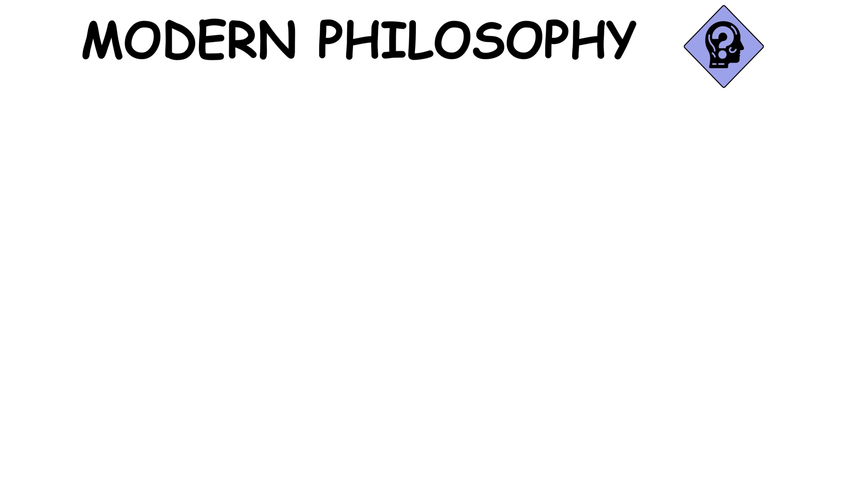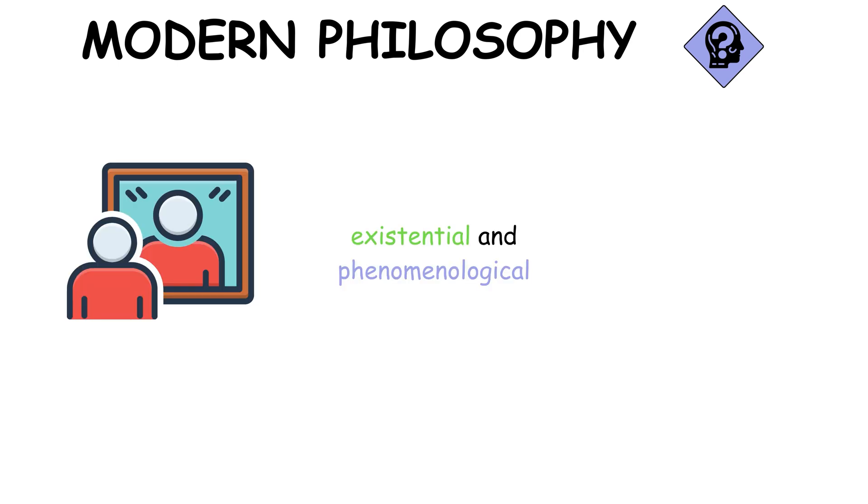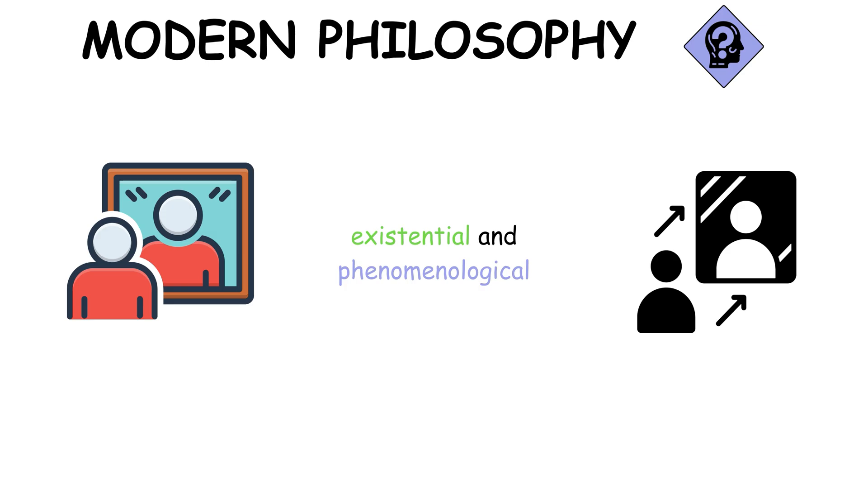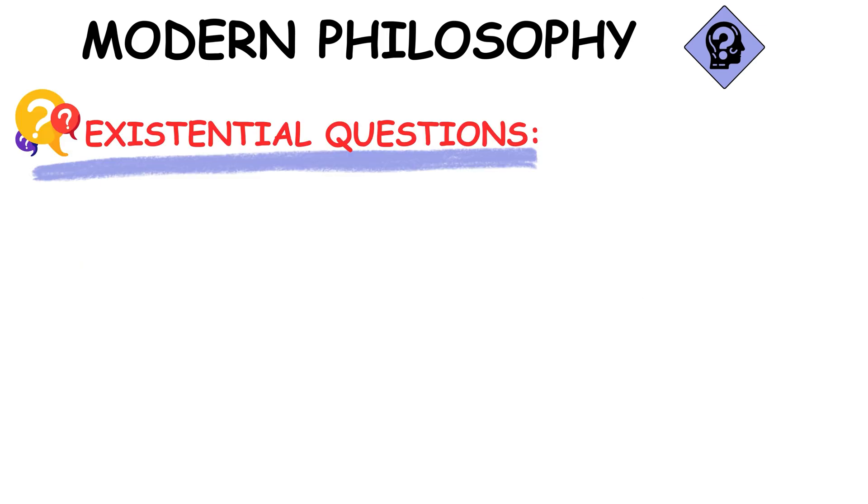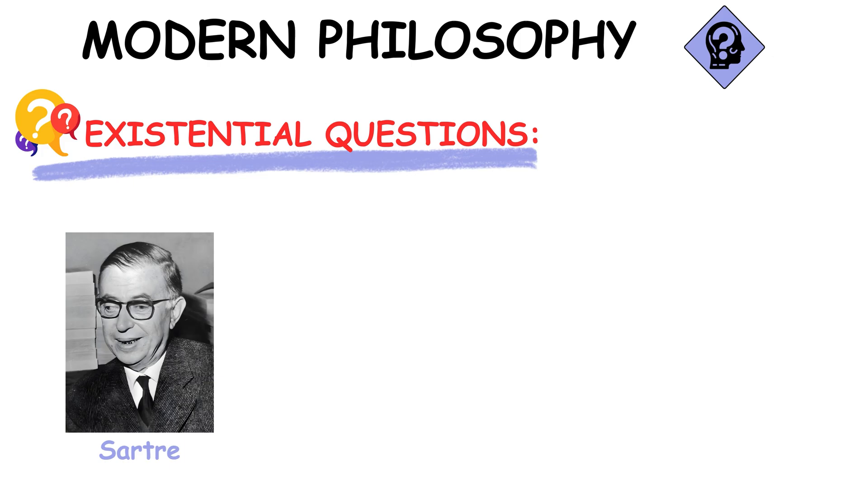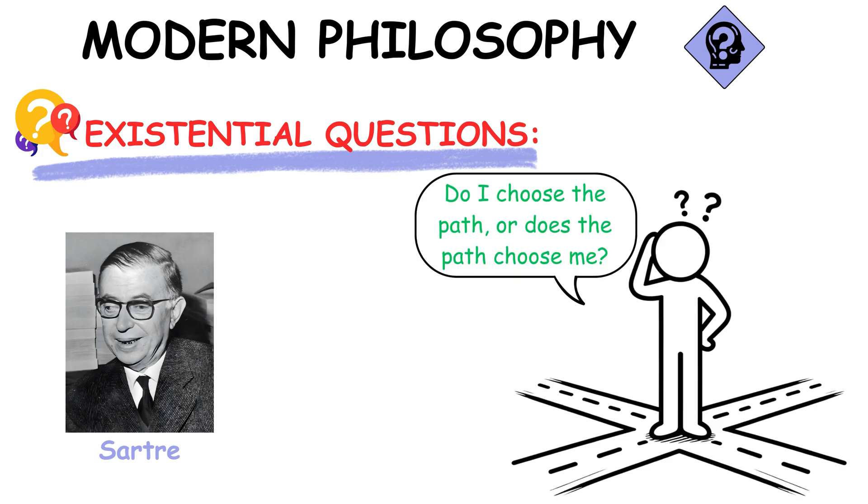Modern philosophy reflected on existential and phenomenological aspects of consciousness, deepening our introspective understanding. As philosophy progressed, figures like Sartre began exploring existence itself. They pondered over human freedom, our essence, and how consciousness defines our reality and personal identity.